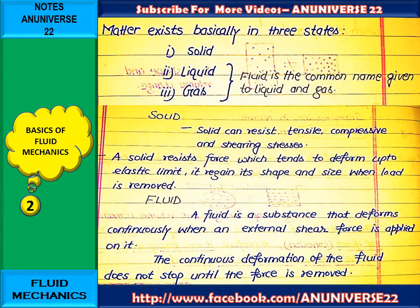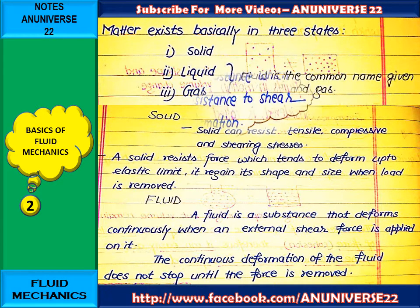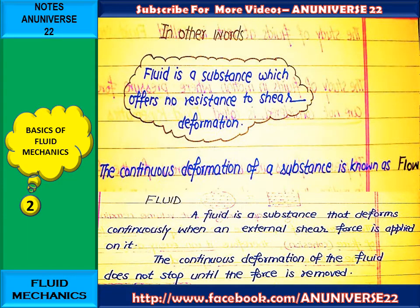After the elastic limit, deformation will take place in case of solid. Now, what is a fluid? Fluid is a substance that deforms continuously when an external shear force is applied on it. Shear force is important here, because due to the application of shear force, deformation takes place in case of liquid, and continuous deformation does not stop until the force is removed. In other words, fluid is a substance which offers no resistance to shear deformation. And the continuous deformation of a fluid is known as flow.